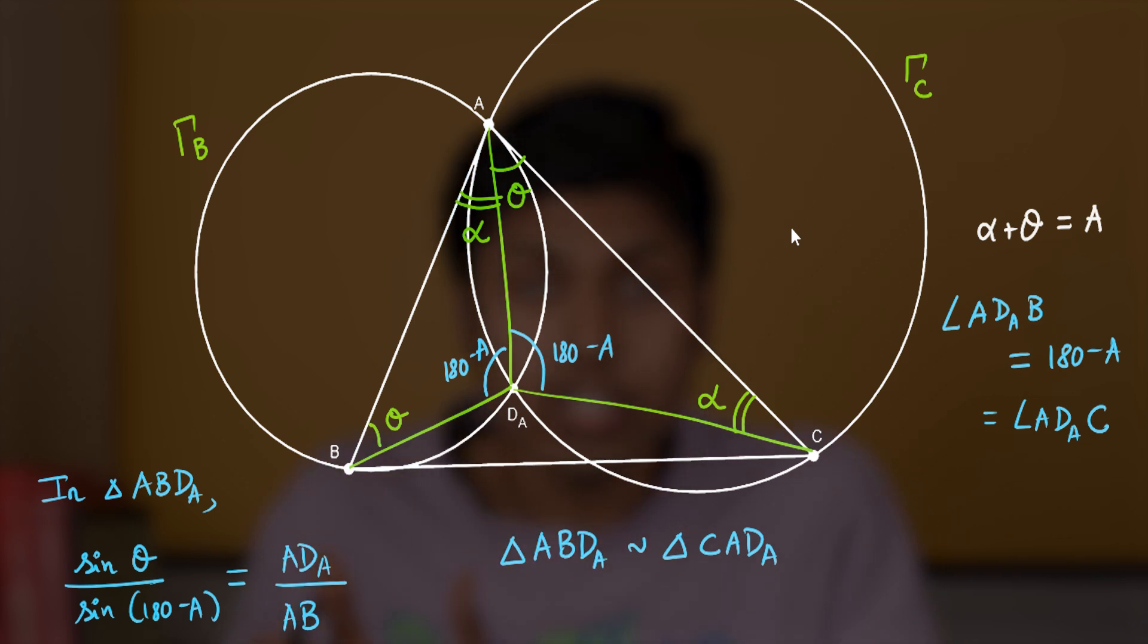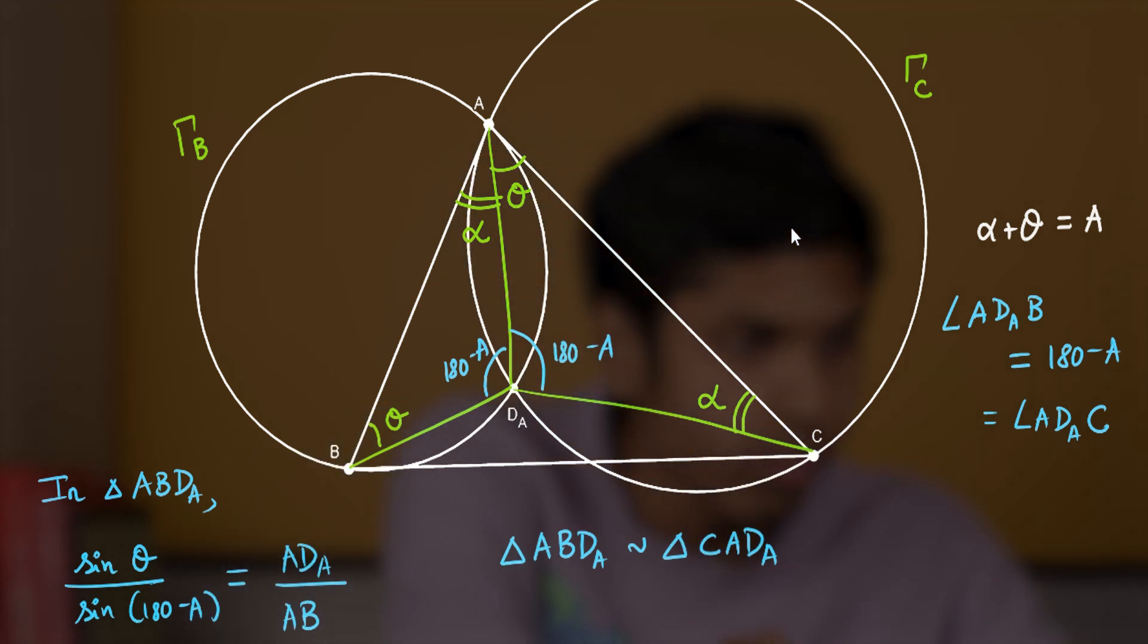The side opposite to angle theta is AD_A and the side opposite to 180 minus A is AB, and that's why we get this ratio.